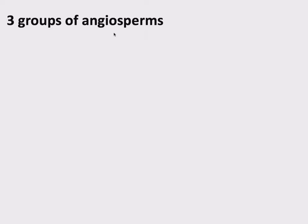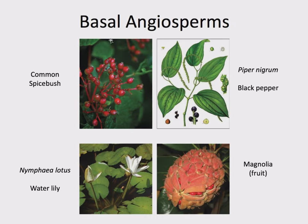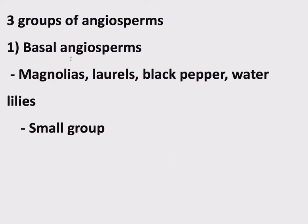Now that we've covered anatomy and reproduction, let's talk about groups. There are three main groups of angiosperms. The first is basal angiosperms — a relatively small group. What holds them together is evolutionary relationship rather than any obvious physical similarity. This group includes water lilies, magnolias, black pepper, and spicebush. You should know these: magnolias, laurels, black pepper, and water lilies. Their distinguishing feature is essentially that they're not members of the other two groups.